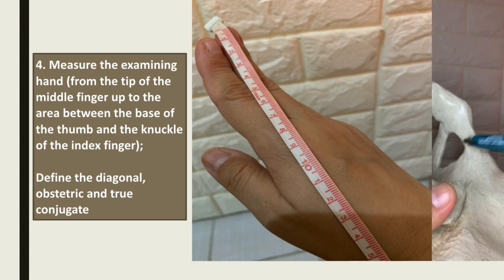Measure the examining hand from the tip of the middle finger up to the area between the base of the thumb and the knuckle of the index finger. Then define the diagonal conjugate, the obstetric conjugate, and the true conjugate. Only the diagonal conjugate can be measured clinically. The diagonal conjugate is measured from the inferior border of the symphysis pubis to the sacral promontory. The obstetric conjugate is from the middle of the symphysis pubis to the sacral promontory, and the true conjugate is from the upper border of the symphysis pubis to the sacral promontory.